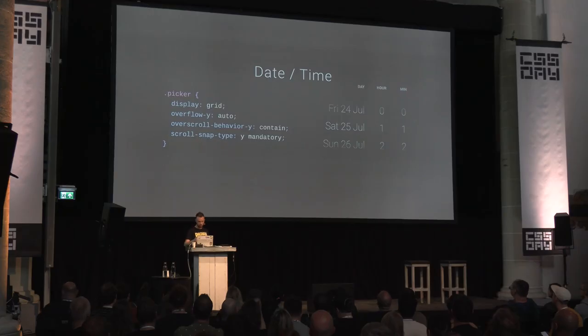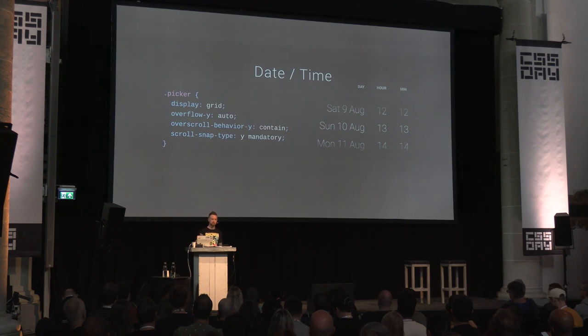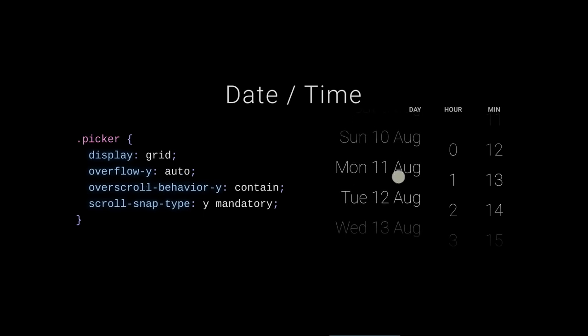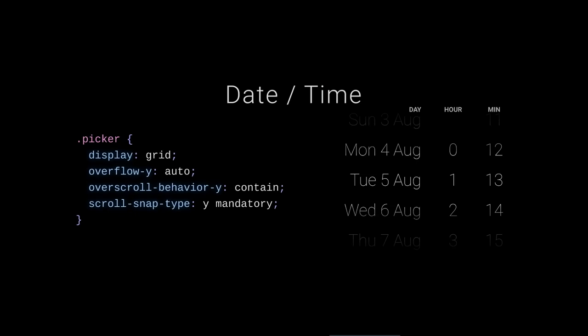Here's a date-time selector built with scroll snap points — a cool design I saw online. It looks great, and if we knew which item was snapped via JavaScript, we could submit the selection to a database. This feels really nice on mobile — you can just whip through and make selections. Each column is display: grid with overflow-y: auto, overscroll-behavior: contain, and scroll-snap-type: y mandatory.